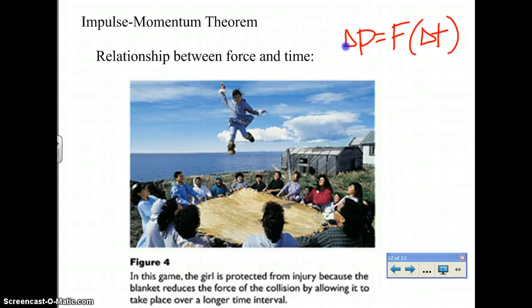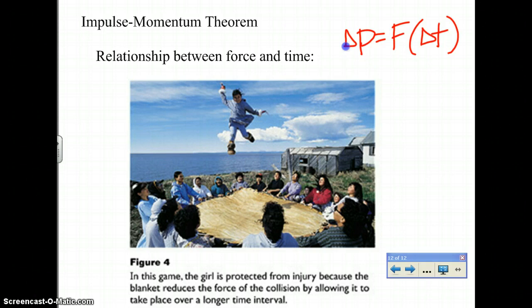A large force exerted over a short time causes the same change in momentum as a small force exerted over a longer amount of time. Think about memory foam: you don't apply as much force, so it takes a longer time to contour back. Whereas really stiff springs take a shorter time — practically instantly back to position. There are so many real-life applications of the impulse momentum theorem.